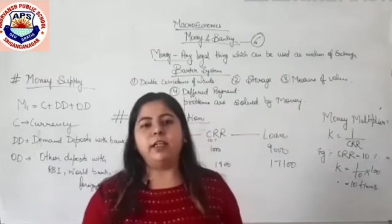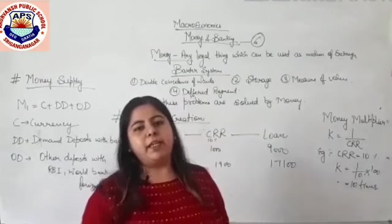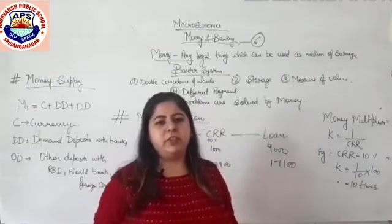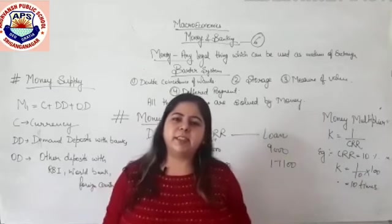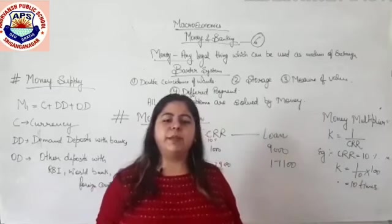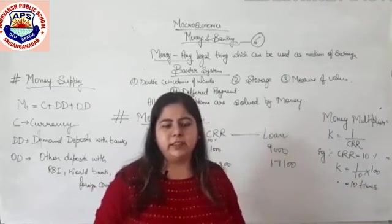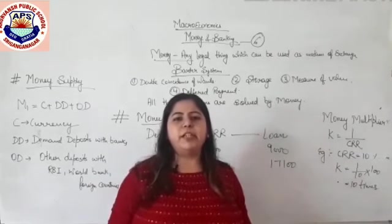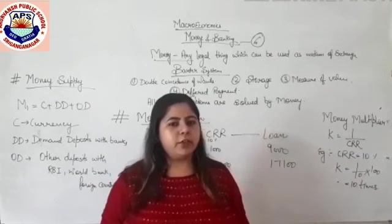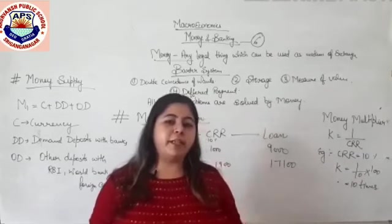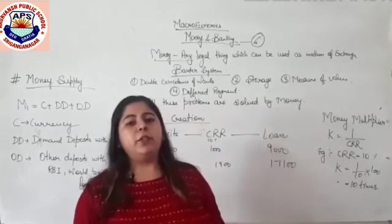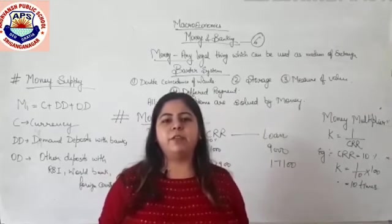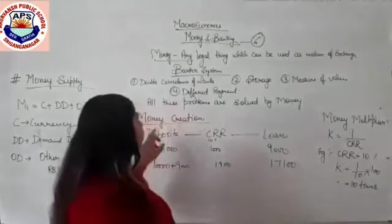Prior to money, there was a barter system of exchange. The barter system means we buy goods with goods — this is also known as a CC economy, or Commodity for Commodity economy. You can only purchase another commodity by giving one in exchange.